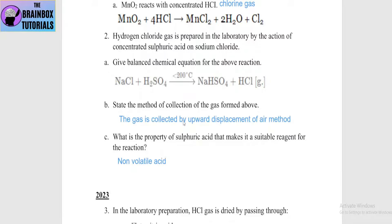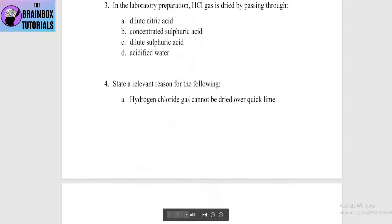The balanced chemical equation: NaCl + H2SO4 (concentrated), at less than 200°C → NaHSO4 + HCl gas. The gas is collected by upward displacement of air method. The property of sulfuric acid is that it acts as a non-volatile acid — its boiling point is high, so it doesn't evaporate.